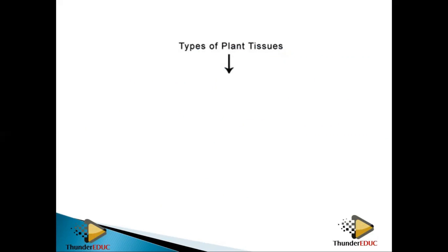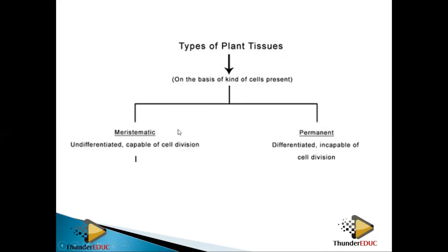Plant tissues are divided based on the kind of cells which are present in the tissue. Which type of cells are present will give us the classification of these tissues. These tissues are divided into meristematic tissue and permanent tissues. Meristematic tissues are undifferentiated, have the ability to divide, and can change into other forms.